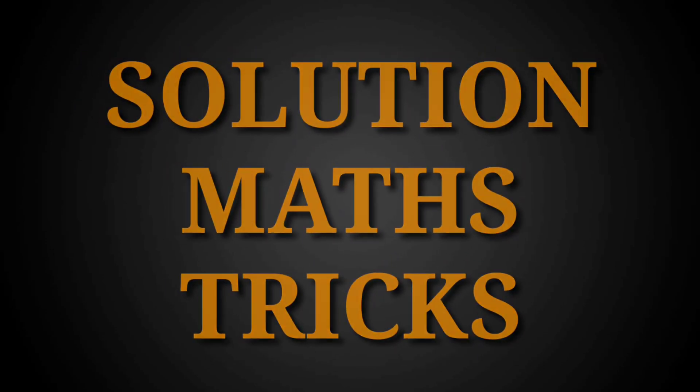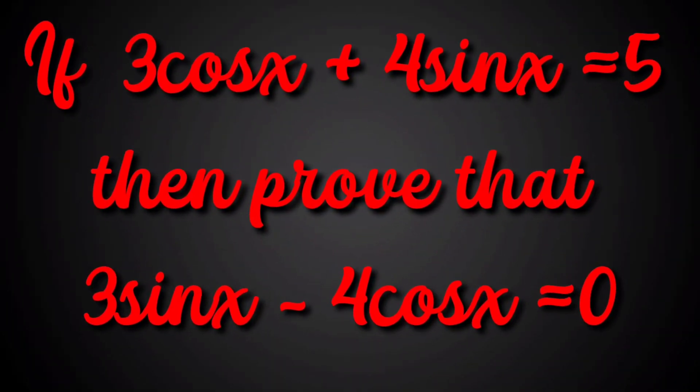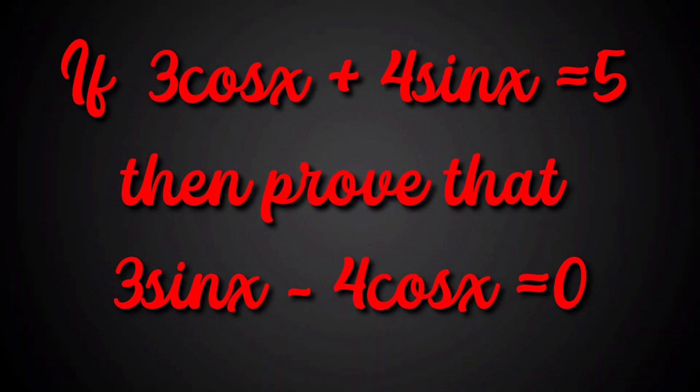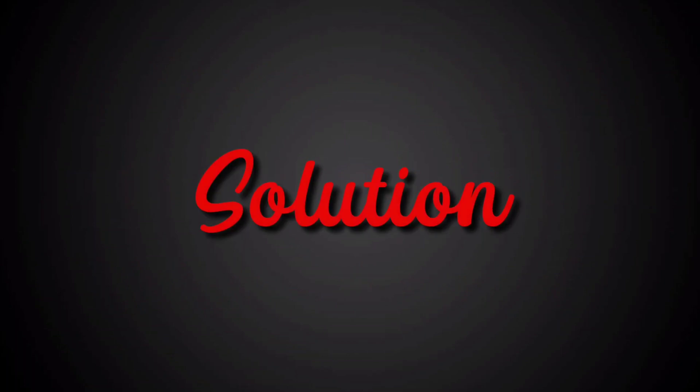Hello friends, welcome to my channel Solution Not Stick. Today we will solve a question: if 3cos(x) + 4sin(x) = 5, then prove that 3sin(x) - 4cos(x) = 0. Solution: Given 3cos(x) + 4sin(x) = 5, then squaring both sides we have: